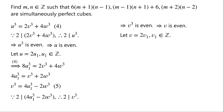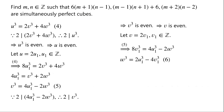We let v equal 2v₁, where v₁ is an integer. Then substituting v equals 2v₁ in equation 5, we have 8v₁ cubed equals 4u₁ cubed minus 2w cubed. Dividing by 2, we have w cubed equals 2u₁ cubed minus 4v₁ cubed. We label this as equation 6.